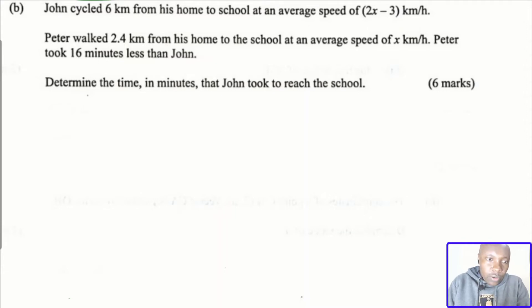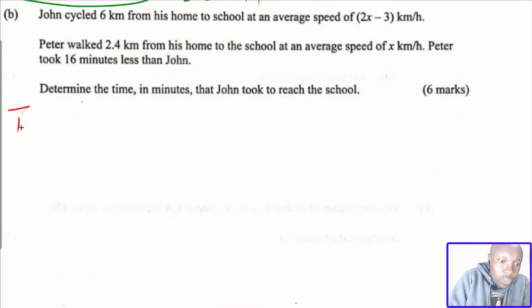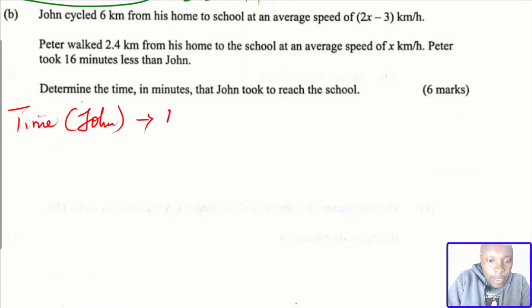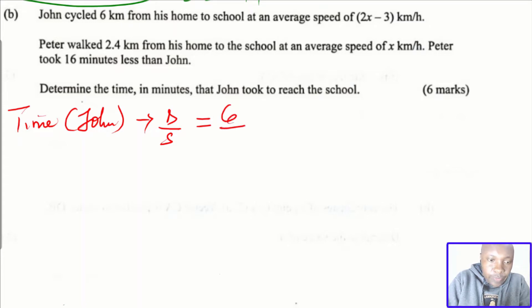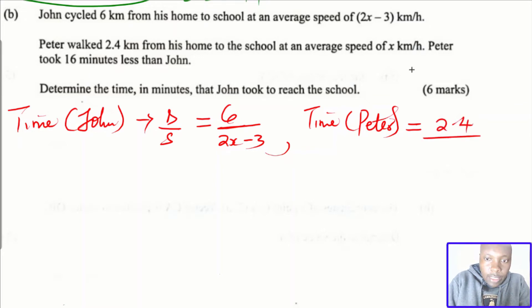We are given both the distance and speed for John and Peter, so we can find the time. Time equals distance divided by speed. Time taken by John: distance is 6 km, speed is (2x − 3), so time = 6 ÷ (2x − 3). Time taken by Peter: distance is 2.4 km, speed is x, so time = 2.4 ÷ x.